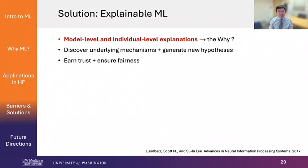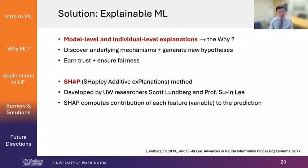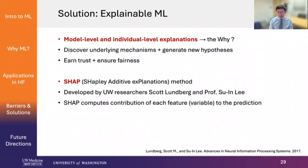Perhaps the most state-of-the-art explainable machine learning method is called the SHAP method, developed by researchers Scott Lundberg and Professor Su-In Lee here in the very strong computer science department at UW. The SHAP method computes the contribution of each feature — also called variables — to the prediction that the machine learning model makes. It actually uses game theory and has a very strong theoretical foundation. If you're interested, you can look at the paper in the references.